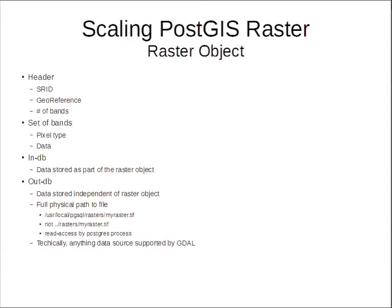More important is the notion of in-db versus out-db. Typically when dealing with a database, everything is stored within the database. PostGIS Raster is a little different — it does both. You can take your raster, satellite imagery, whatever, and let the database store it, or you can leave it outside the database and just point to wherever you store your data. This brings its own set of problems as well as benefits.